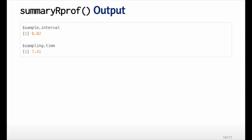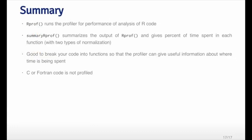The last part of the summaryRProf output is the sample interval — you can see the time interval at which sampling took place for printing out the function call stack, which is 0.02 seconds — and the sampling time, which is just the total amount of time the expression took to run, equivalent to the elapsed time in the system.time function. The profiler is a very handy tool for performance analysis of R code, and I find it often highlights functions that you may not have suspected as being time hogs or bottlenecks, because they're not really core to the real computation you're working on.